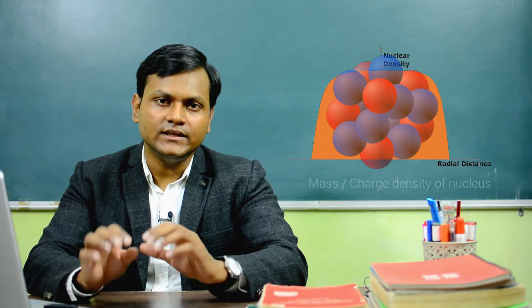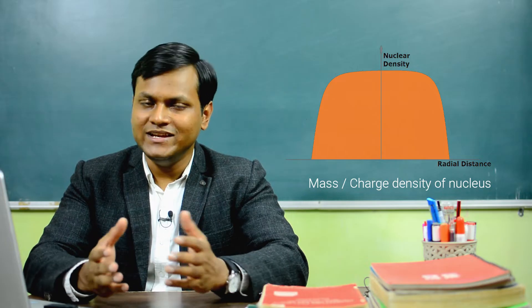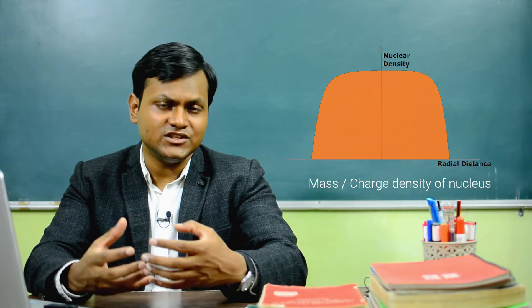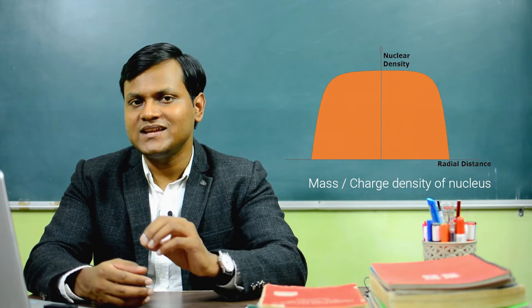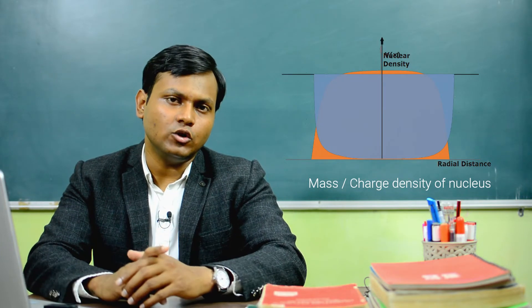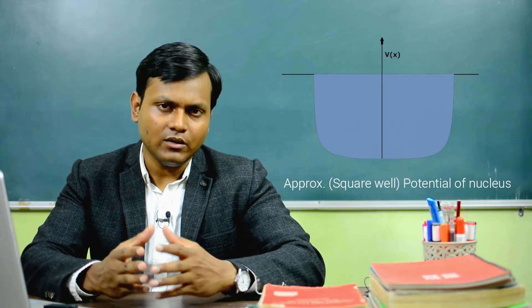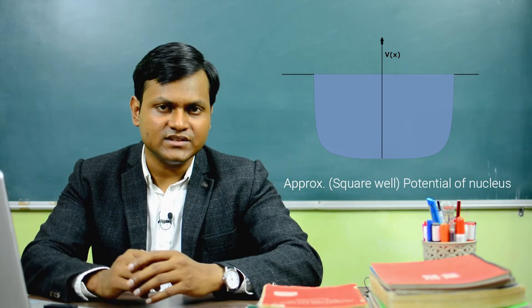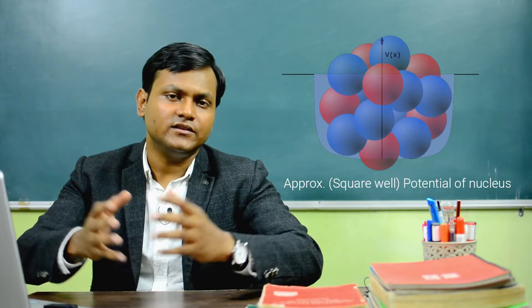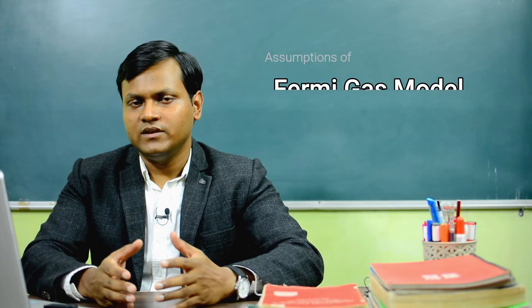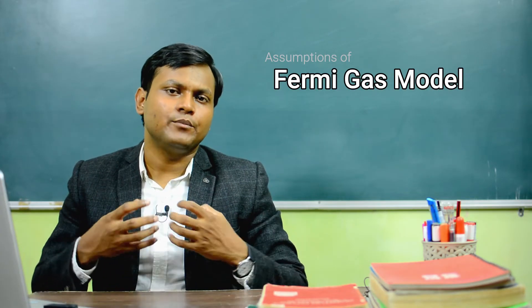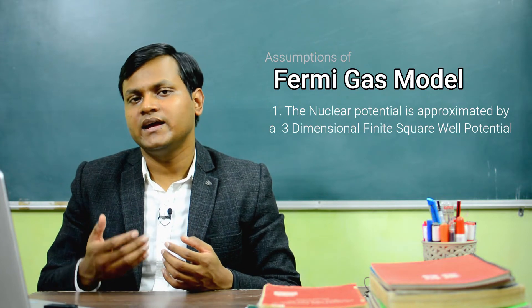Inside a nuclear volume the mass density is almost constant throughout and drops to zero only near the boundary. So the nuclear potential can be assumed to have a constant depth across the entire volume, dropping sharply to zero near the boundary. This means we can approximate the general potential field of the nucleus with a square well potential — constant depth over a certain distance, then suddenly dropping to zero — specifically a three-dimensional finite square well potential.